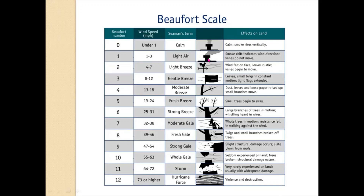Number one, from one to three mph, is light air — smoke is slightly drifted. Number two, four to seven mph, is a light breeze — wind felt on the face, leaves rustle, wind vanes begin to move. Number three is a gentle breeze — small twigs in constant motion, light flags extending. Number four is a moderate breeze — dust, leaves, and loose paper raised up, small branches move.